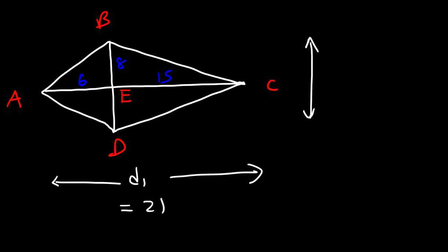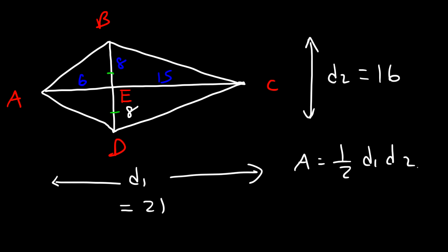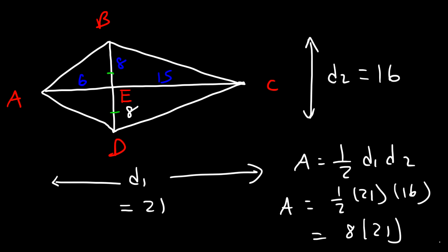E is the midpoint of BD, so AC bisects BD into two congruent parts. Since BE is 8, ED is also 8, making D2 equal to 8 plus 8, or 16 units. The area is one-half times D1 times D2, so one-half times 21 times 16. Half of 16 is 8, and 8 times 21 is 168. The area of this kite is 168 square units.